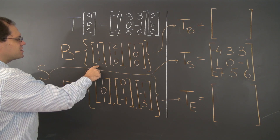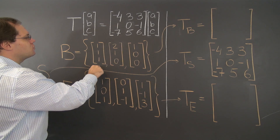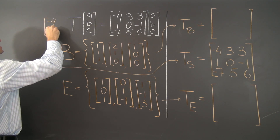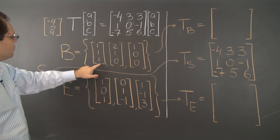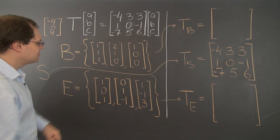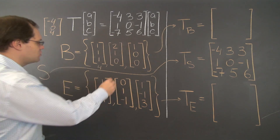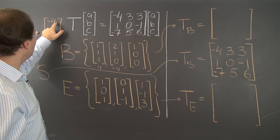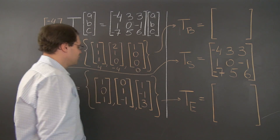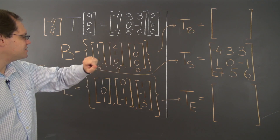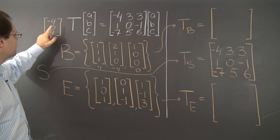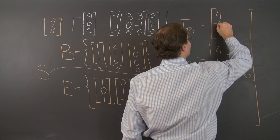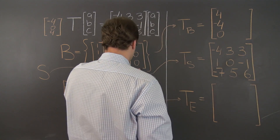So applying this linear transformation to the first basis element, (1, 1, 1), we get (-4, 0, 4). We must have 4 of the third basis element — that's our only chance to get a 4 in the last entry. To get 0 in the middle, we need minus 4 of the second, giving us (4, -8, -4) so far. We need to end up with -4 in the first entry, so 0 of the first basis element. The coefficients for column 1 are (4, -4, 0).